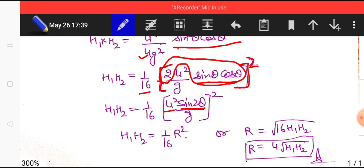So my h1 h2 becomes R squared by 16 or I can say R equals root 16 h1 h2 or R equals 4 times root h1 h2. That is the relation between range h1 and h2.